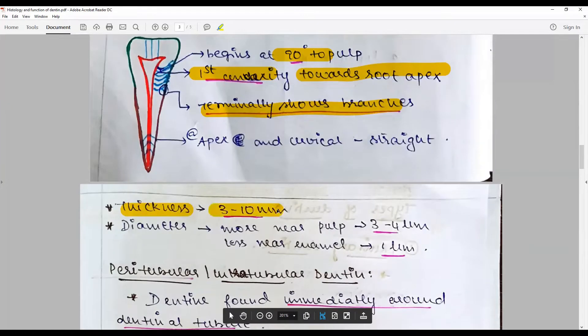The thickness of dentin varies from 3 to 10 mm depending upon the tooth and the position. It is more thick in the cuspal tips. The diameter is more nearer to the pulp at about 3 to 4 micrometers, and at the enamel end it is very less.